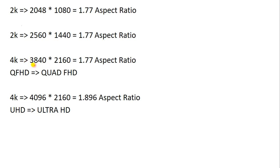After 2K, we have 4K. In a 4K TV screen, there are 3840×2160 pixels in width and height, with an aspect ratio of 1.77. This is called QHD — Quad Full High Definition. Another version in 4K has pixels of 4096×2160, with an aspect ratio of 1.896, and this is called UHD — Ultra High Definition. If your friend says they have an Ultra HD TV, you should understand that device has this many pixels.